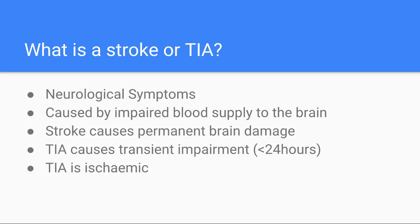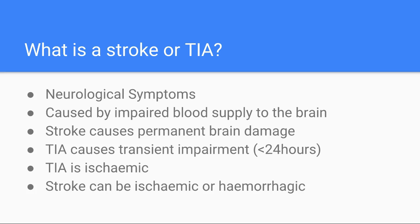TIA, by definition, is ischemic — from impaired blood supply — whereas there are two subtypes of stroke: ischemic or hemorrhagic. Hemorrhagic stroke often presents very similarly to ischemic strokes, but when the brain is imaged, blood is seen. It's important to note that given the presenting symptoms can be so similar, early neuroimaging is essential to differentiate it from ischemia, as the management is very different.